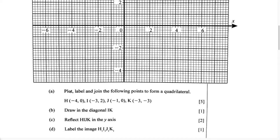This question says: plot, label, and join the following points to form a quadrilateral. They give us the four points they want us to plot — H, I, J, and K.